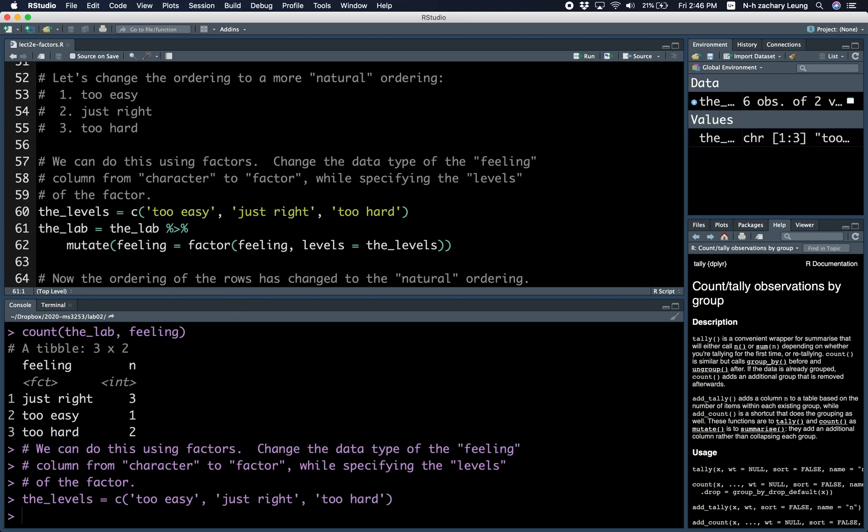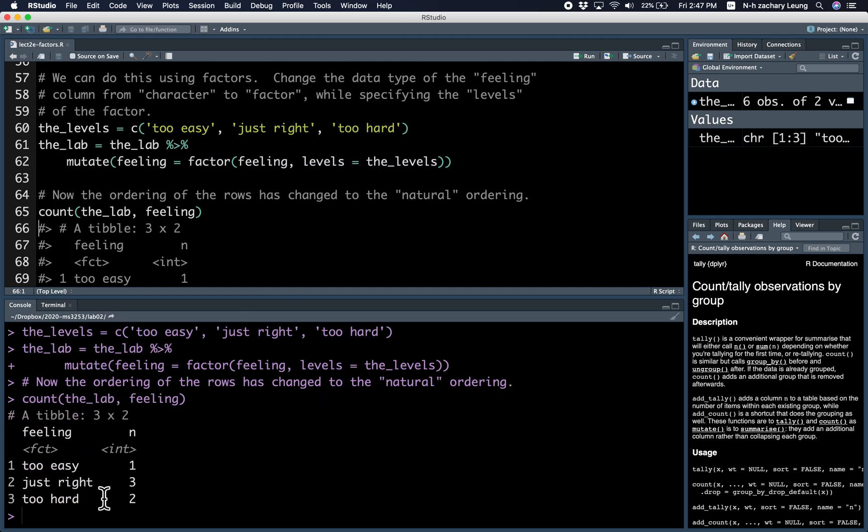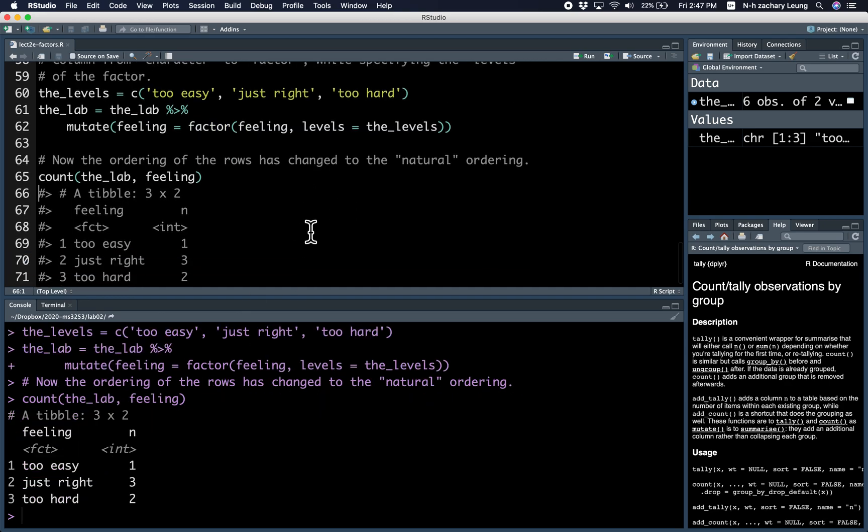Let's say you want it to be ordered from easiest to hardest. So you specify the levels. We create a vector of the levels, then you use the factor function with the levels specified. Now, the feelings are ordered from easiest to hardest as we want.